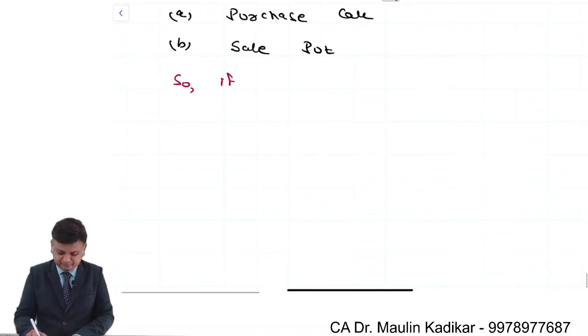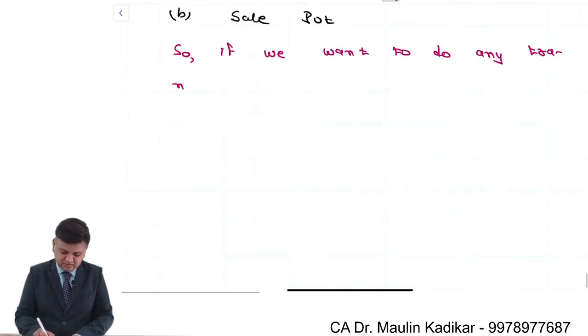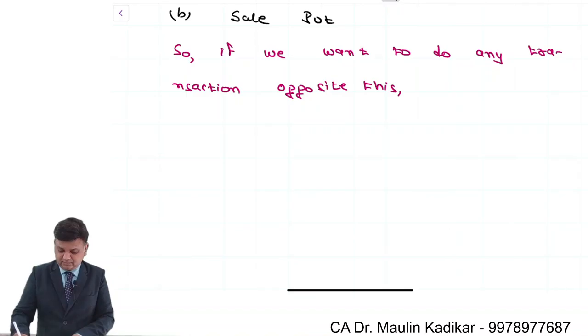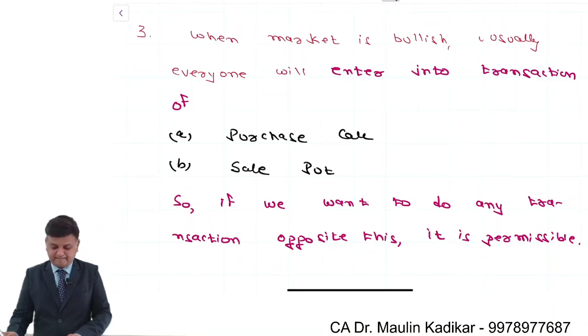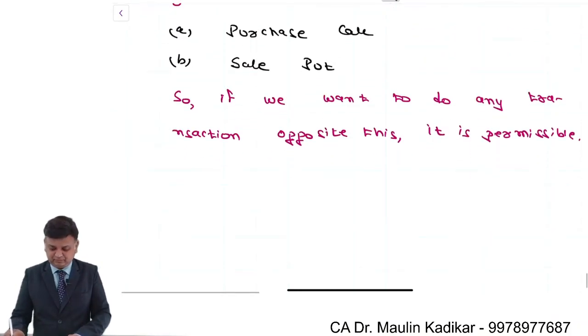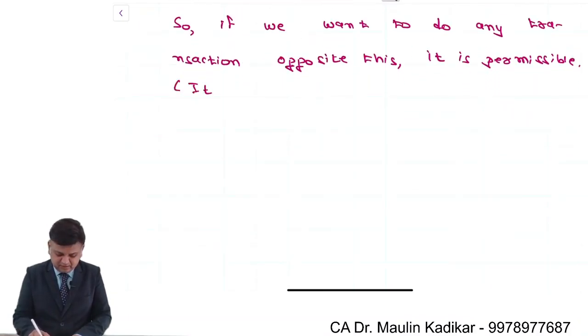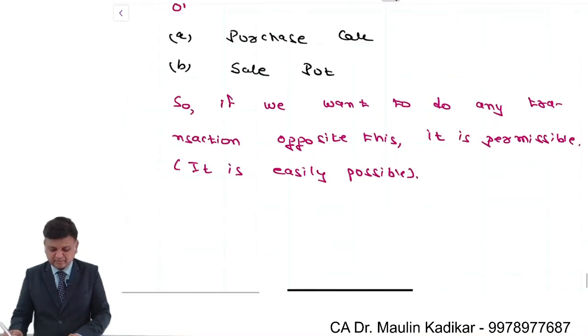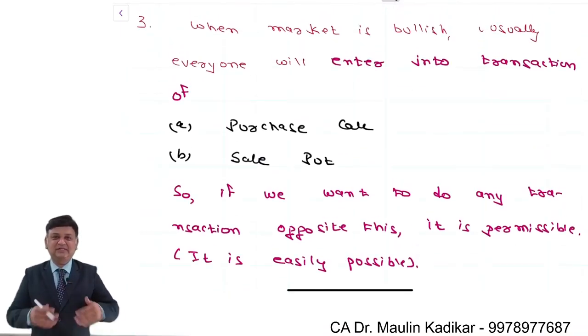If we want to do any transaction opposite to this, it is permissible. In bracket, it is easily possible. All transactions are of course permissible.